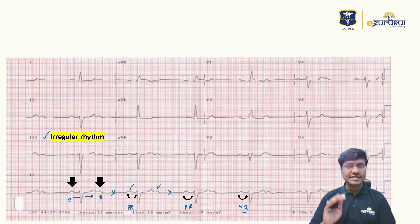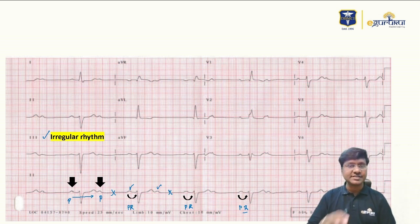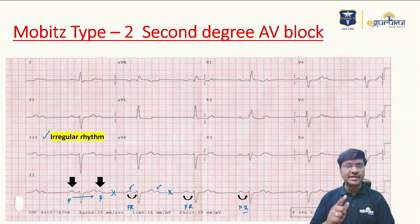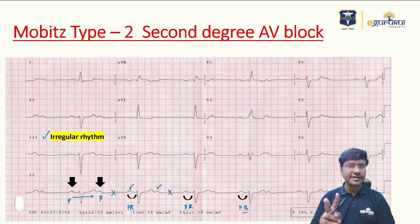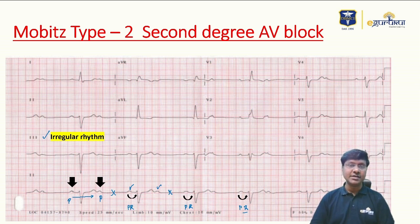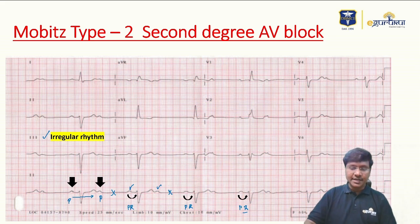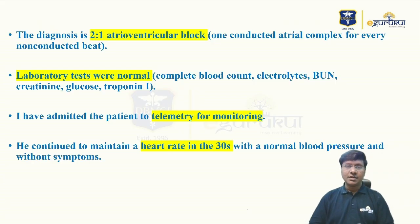The diagnosis of this ECG is Mobitz Type 2 second degree AV block. In second degree AV block we have Type 1 and Type 2. This is Type 2 — because the PR interval is constant. In Mobitz Type 1 there is progressive prolongation of the PR interval, whereas here it remains fixed with intermittent dropped QRS complexes.